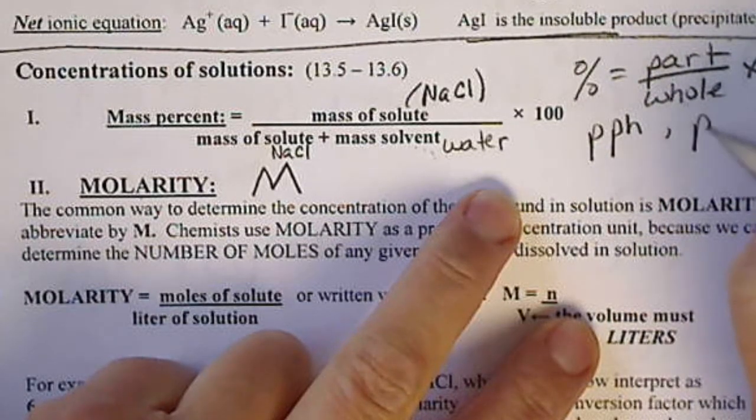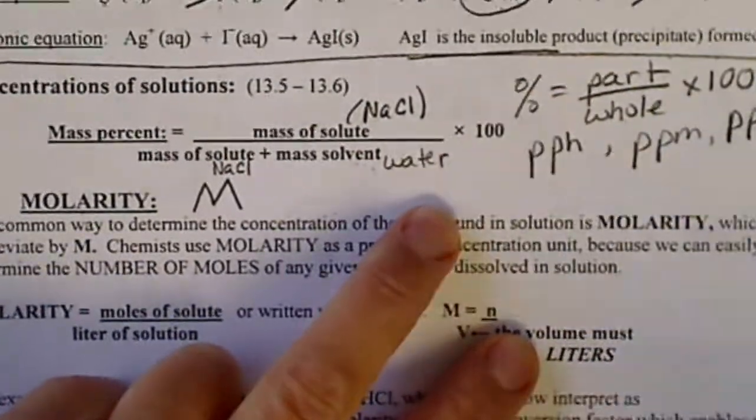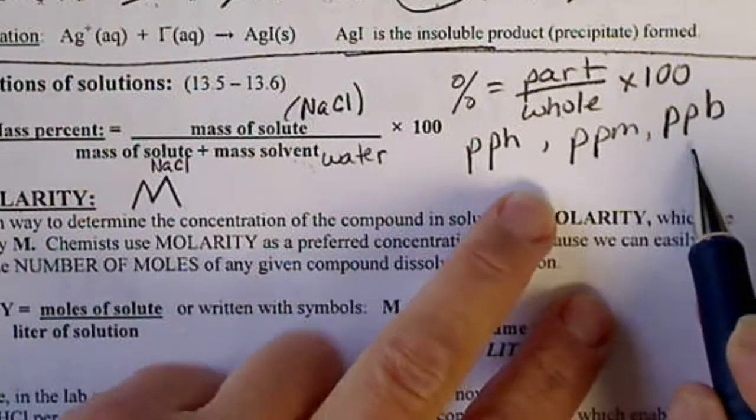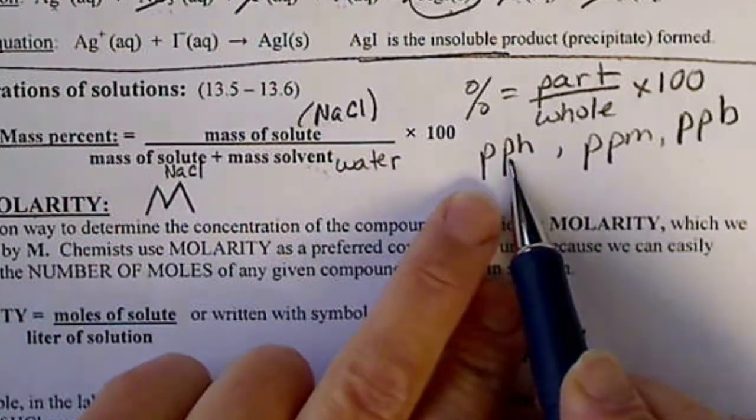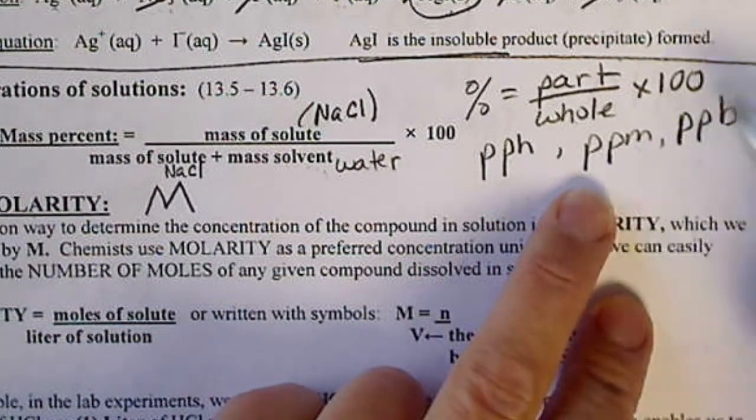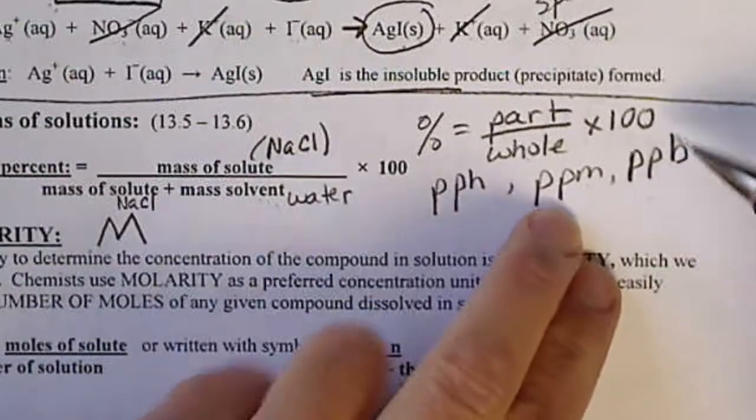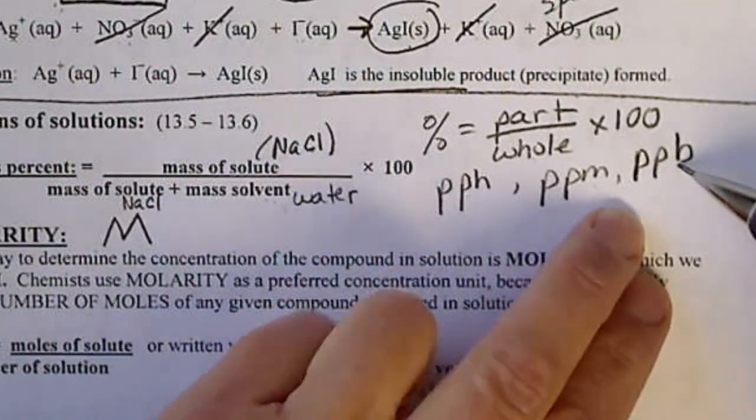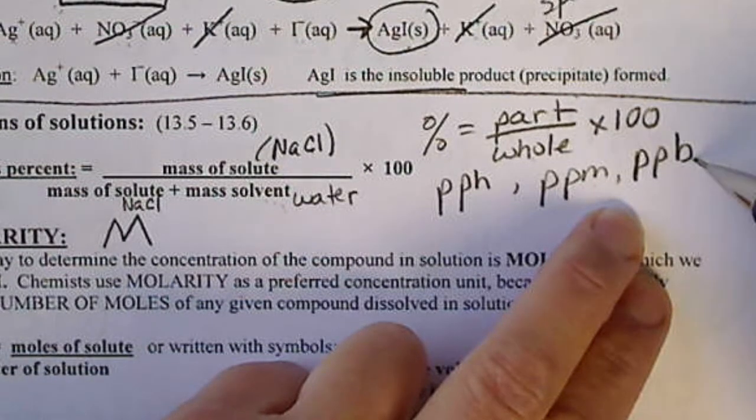You may have heard of part per million or part per billion. So that's a common way of reporting maybe how much arsenic is in the water. A part per hundred is just a percent. Part per million, we take the part over the whole and multiply by a million. And a part per billion, we take the part over the whole and multiply by a billion.